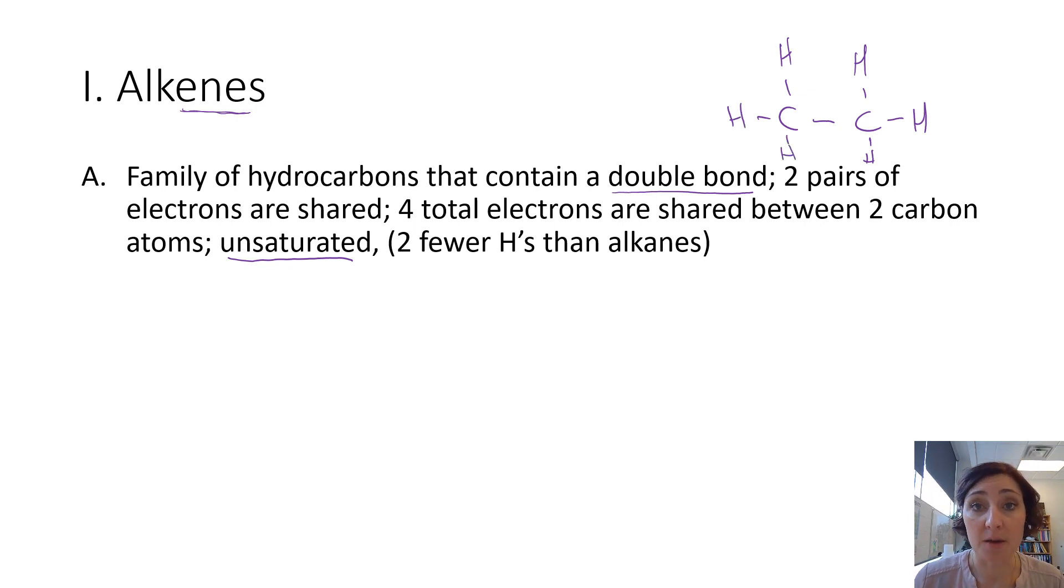If we had ethane, it would have six hydrogens on it. Well, how do we make a double bond? How do we make this into an alkene? What we're going to have to do is remove two of these hydrogens that will leave single valence electrons on each of these carbons, both of which are going to become part of a shared pair of electrons creating that double bond.